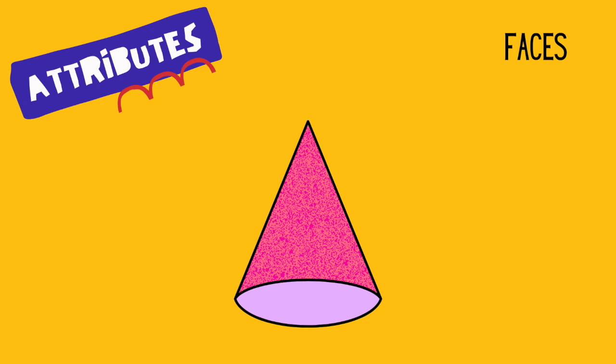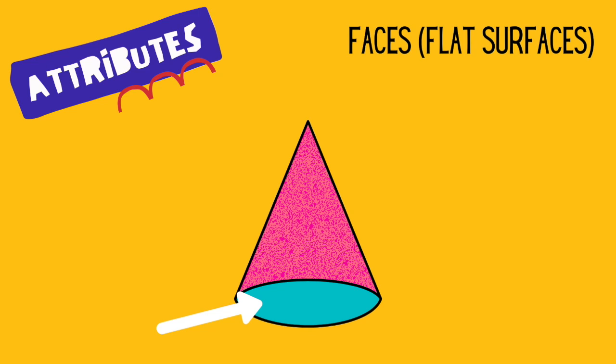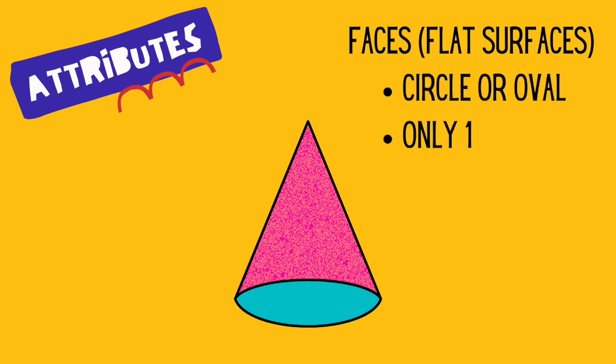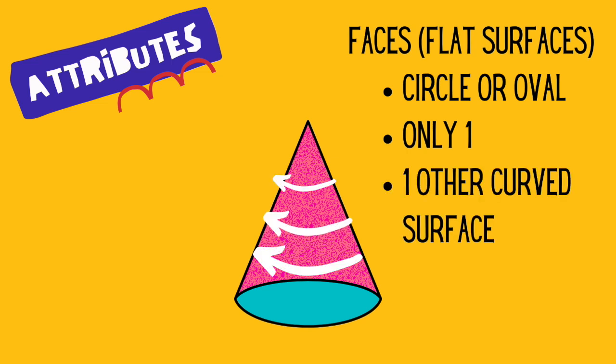In order to identify cones, you must understand the attributes that all cones have. Let's start by talking about faces. Remember, a face is a flat surface, like this one. A cone has one flat surface in the shape of a circle or an oval. Now, it is important to note that a cone has another surface, but this one is a curved surface, so it doesn't count as a face.